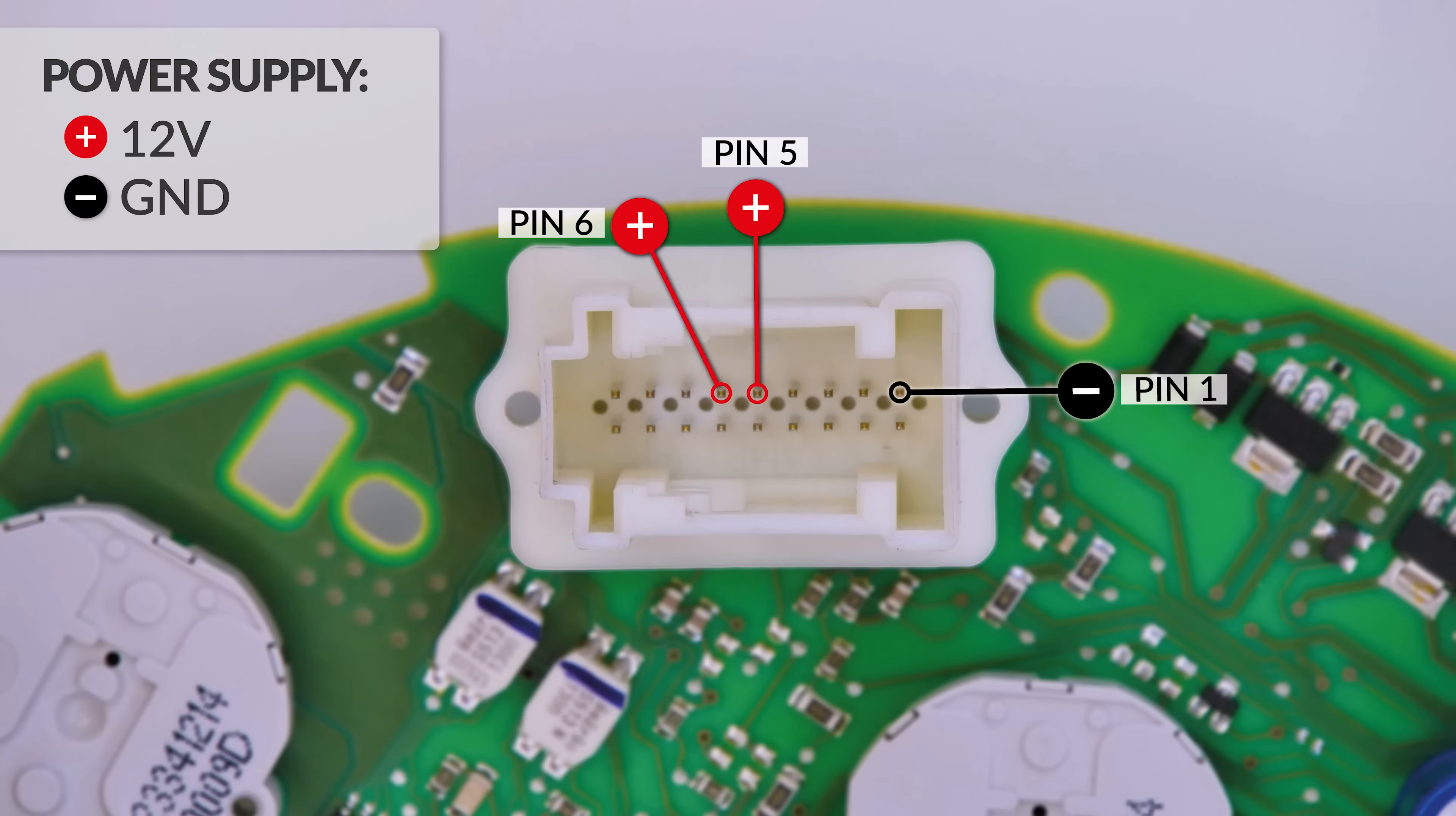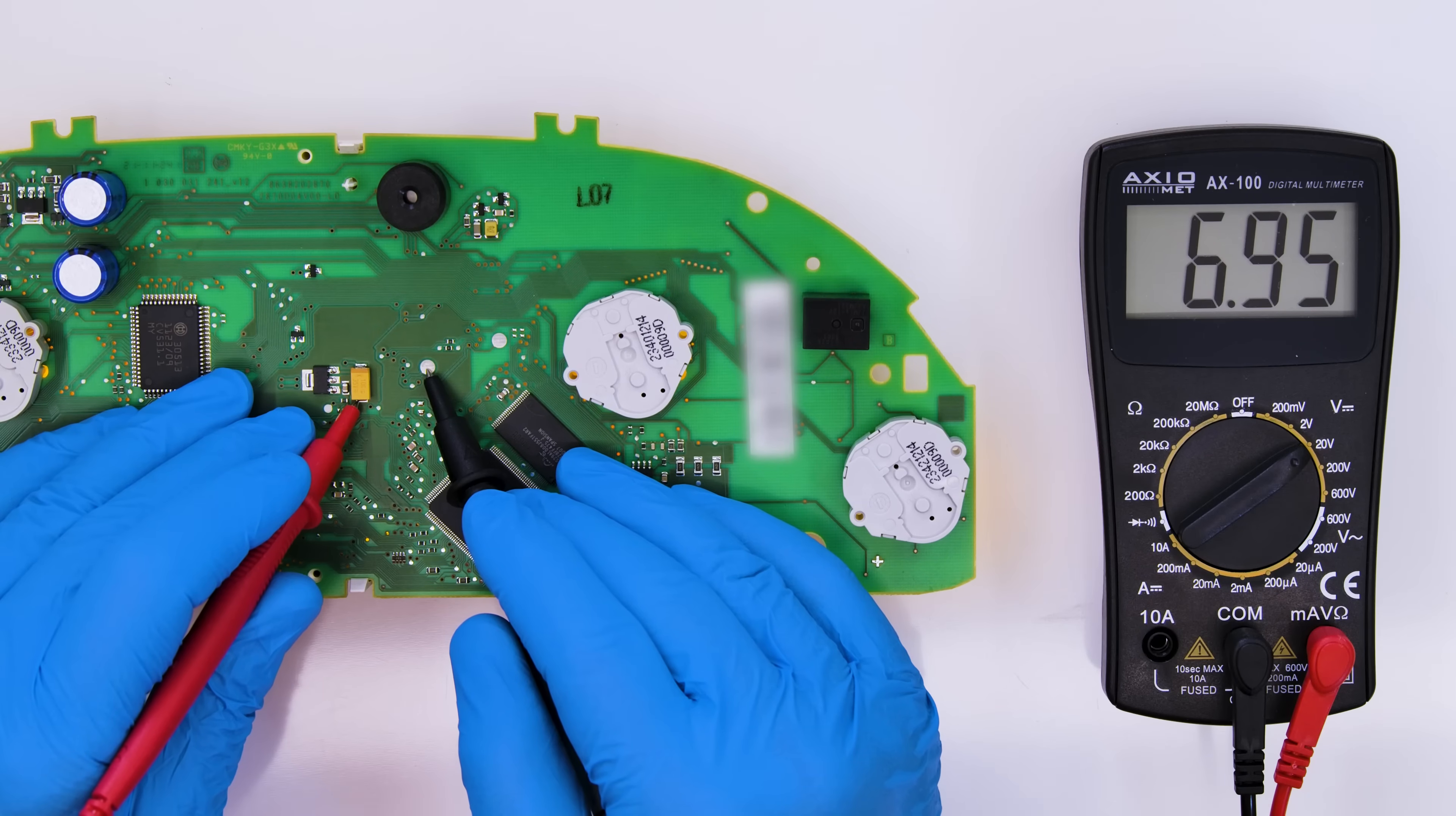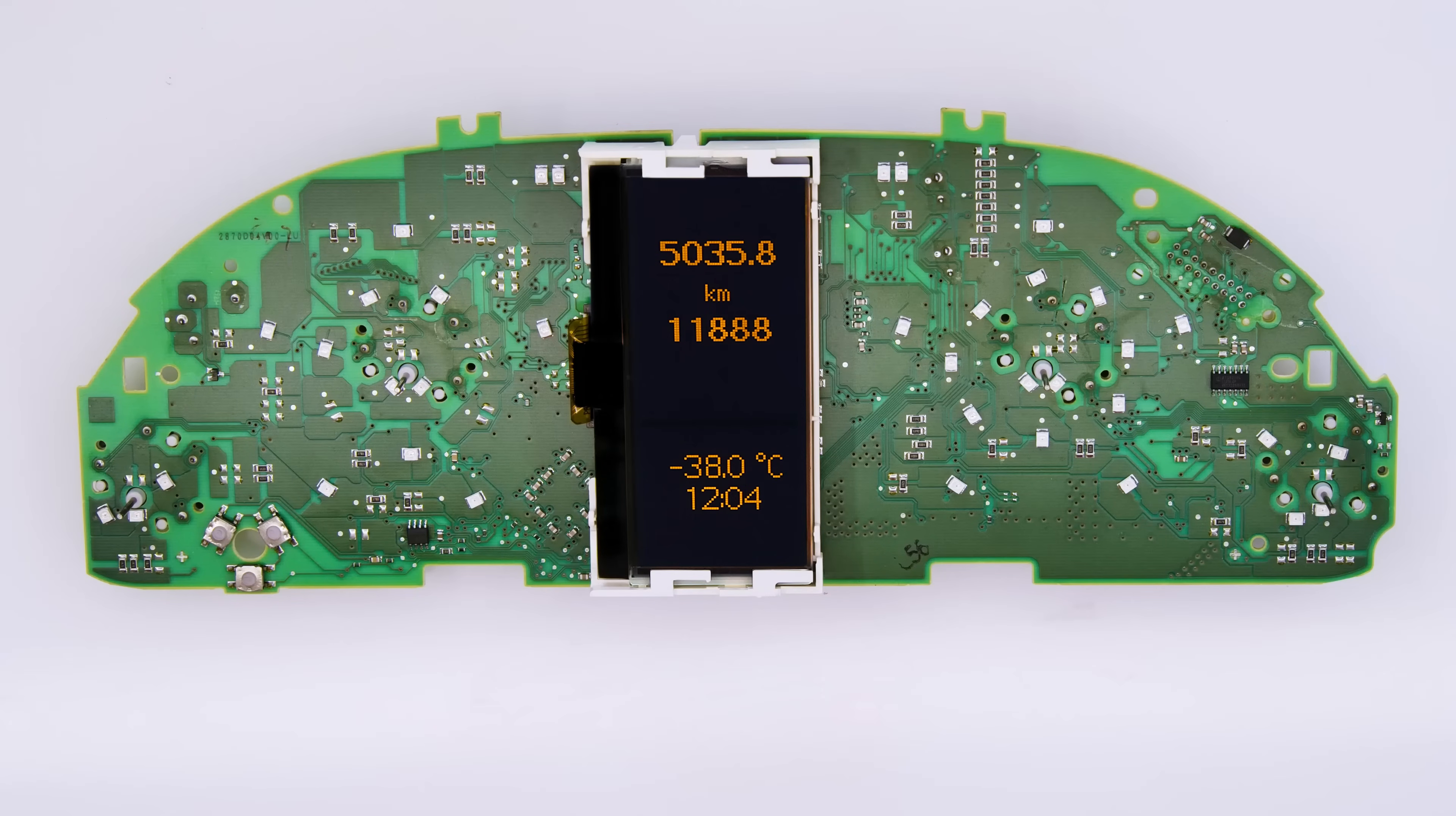Switch on the dashboard again and with the multimeter, recheck the voltage between the points indicated before. If, as in this case, the voltage is now between 6.95V and 7.05V, the modification was successful.